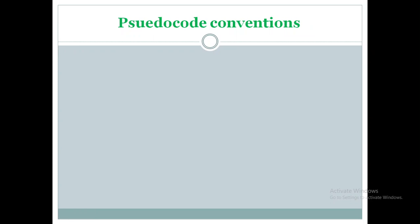Now let us see the pseudocode conventions used to design an algorithm. The first convention is comments: use two forward slashes — anything written after them until the end of the line is treated as a comment. The second convention is a block: use C-style curly brackets — an opening and closing curly bracket — and anything written inside them is called a block.